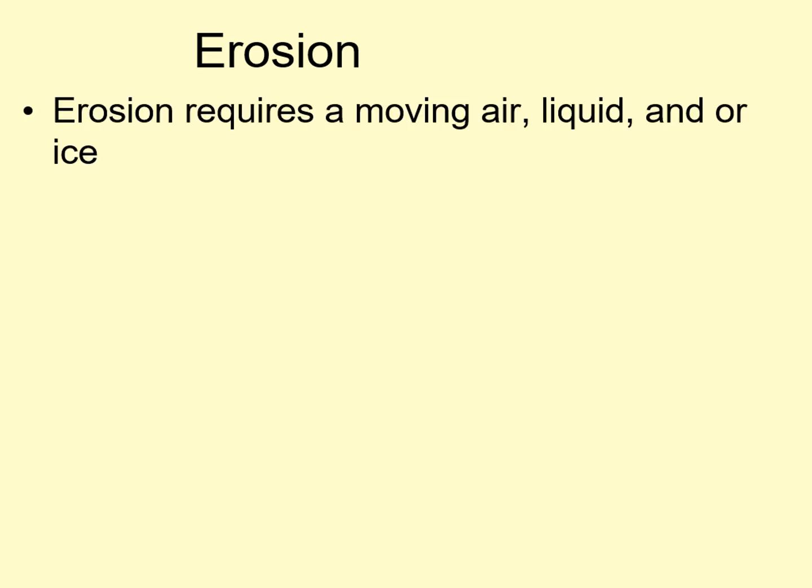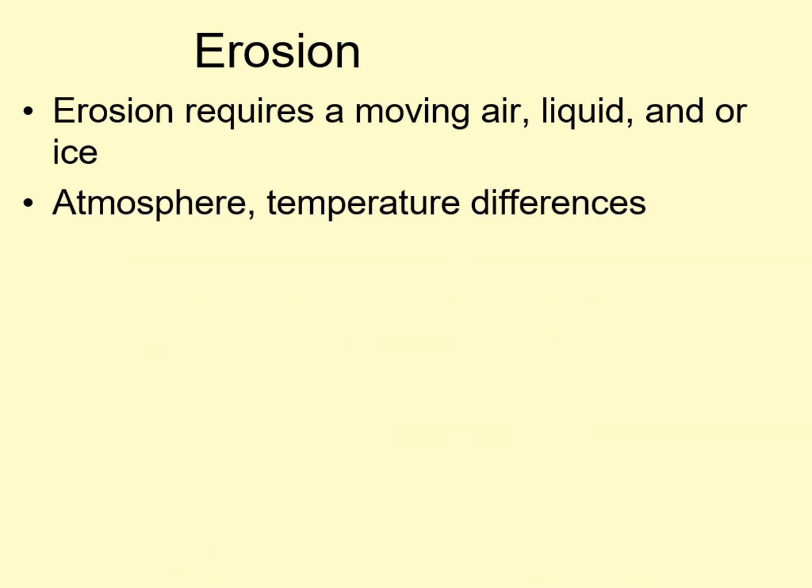Erosion is the rarest of the four major surface processes. It requires the presence of moving air, liquid, or ice across the surface, which requires an atmosphere and enough differences in temperature around the surface to make these move. For example, Venus has a substantial atmosphere, but the temperature is the same everywhere, so there's very little wind on its surface. In fact, there are only three worlds in which we've seen a lot of erosion. We already mentioned Earth — the world with the most erosion and the most diverse types of erosion in the solar system. The other two are Mars and Saturn's moon Titan.